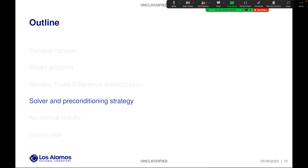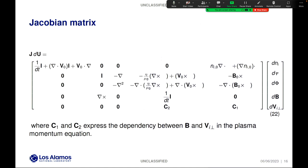Now I'm going to talk about the solver and the preconditioning strategy. Note that the Jacobian matrix corresponding to the quasi-static plasma dynamics model takes this shape shown in equation 22, where I use continuous operators to simplify the presentation. C1 and C2 blocks express the dependency between the magnetic field and the ion flow in the plasma momentum equation. Their formulas differ whether or not we are focusing on subdomains with plasma or without plasma.